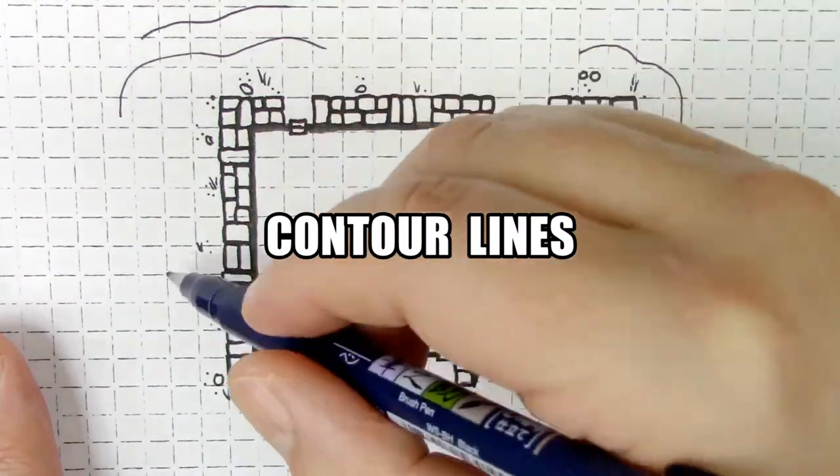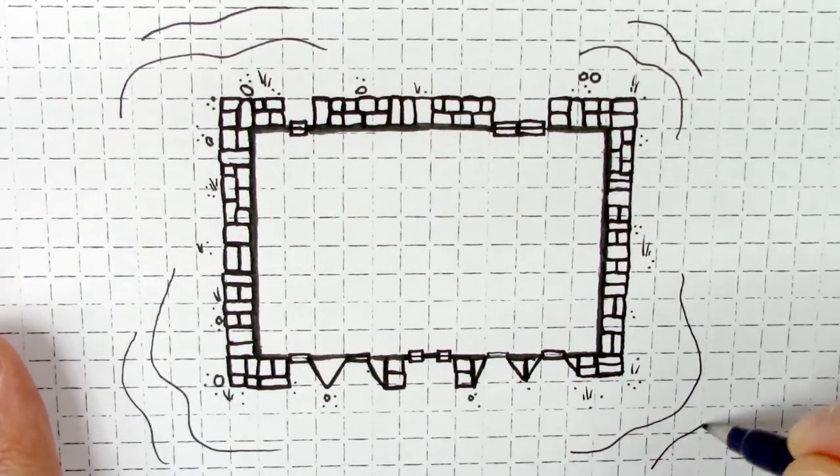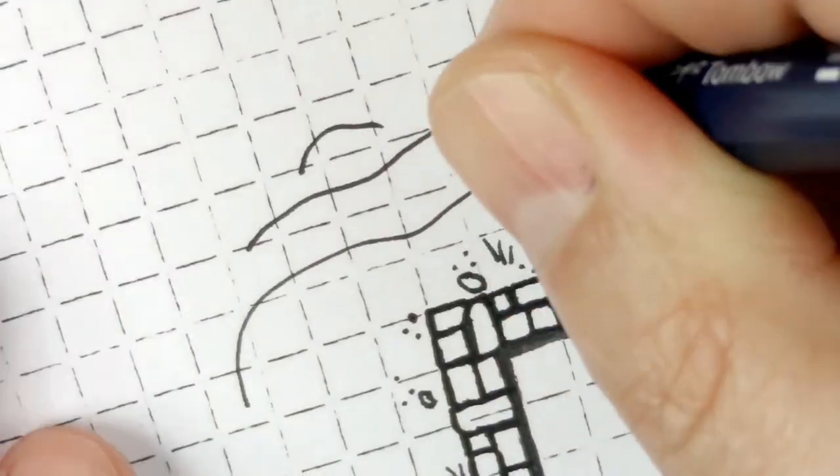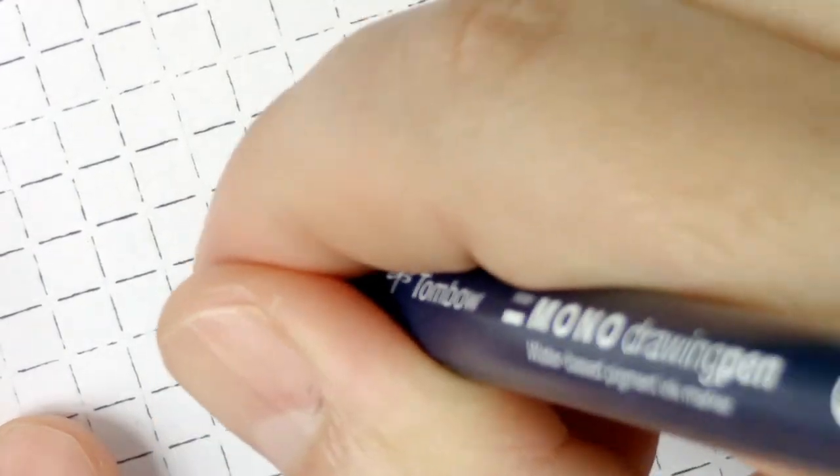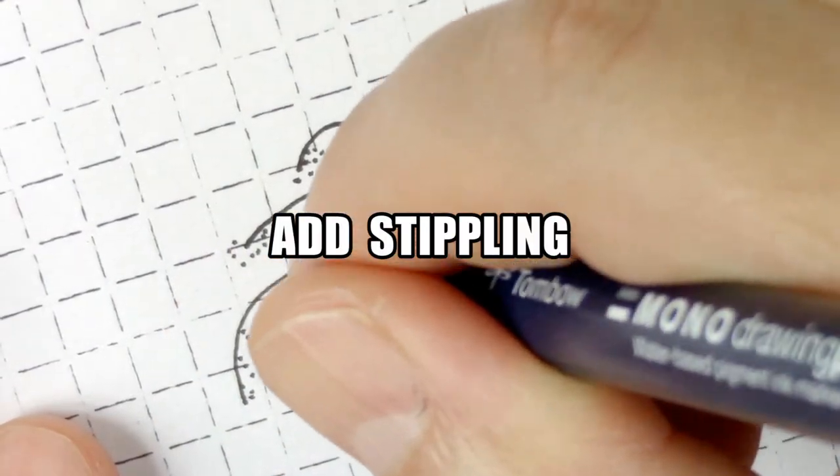Then we're going to add some nice contour lines around the outside of the building just to show that it's not sitting on a flat surface. We can add some stippling to these lines to really make them pop.